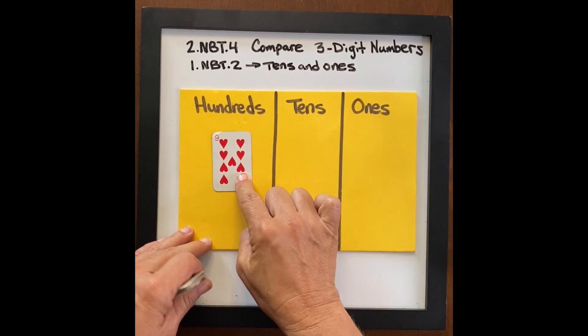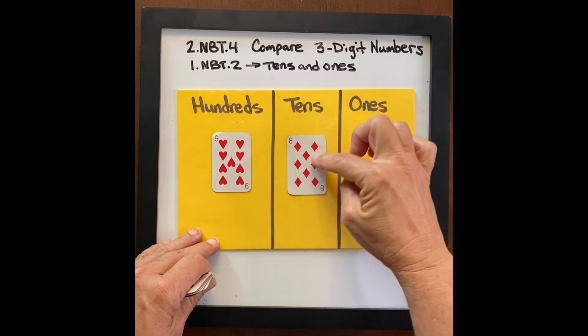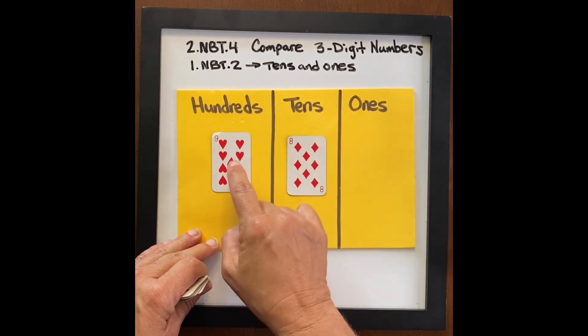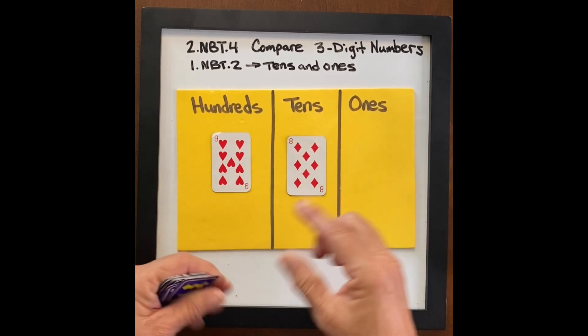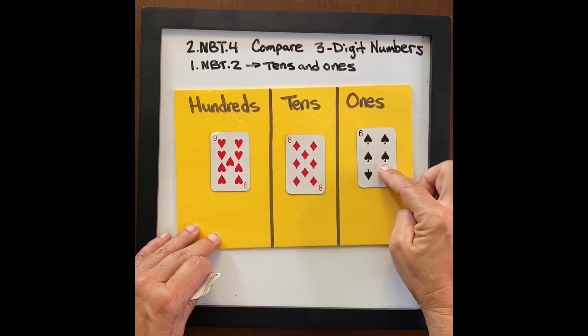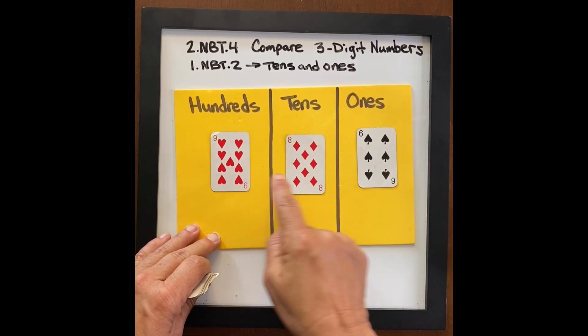Nine hundreds means nine hundred. Eight tens is eighty. So far we have nine hundred eighty. Six ones is six. So far we have nine hundred eighty six.